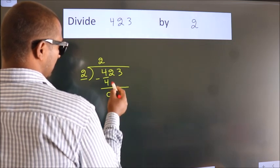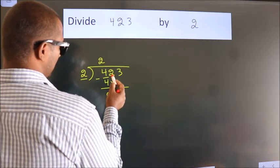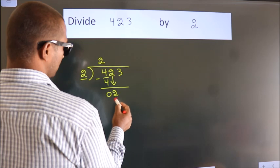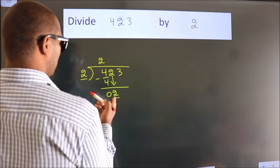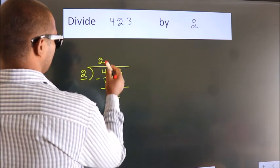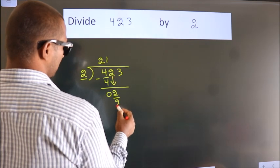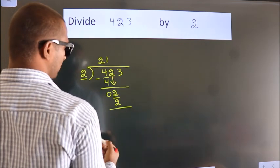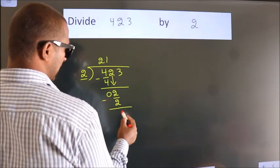After this, bring down the beside number. So, 2 down. So, 2. When do we get 2? In 2 table. 2 1's, 2. Now, we subtract. We get 0.